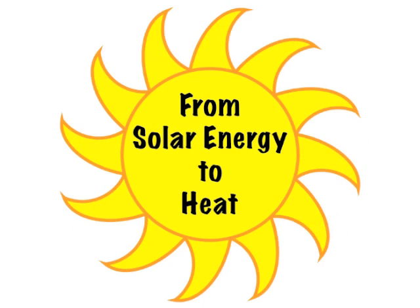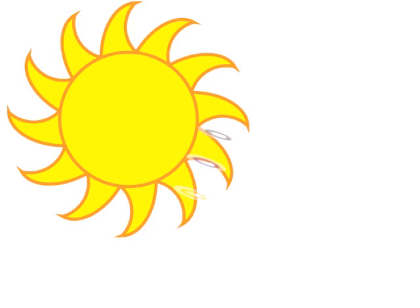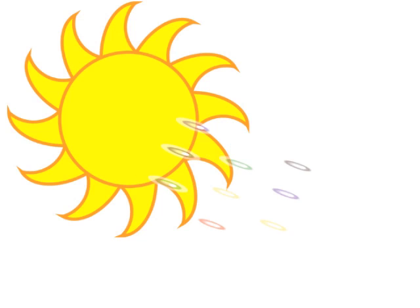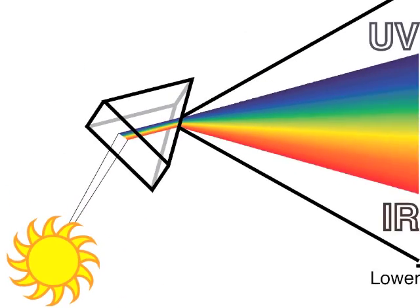From solar energy to heat. Energy travels from the sun as particles of light called photons. Photons are packets or envelopes of energy. Different photons have different energies.